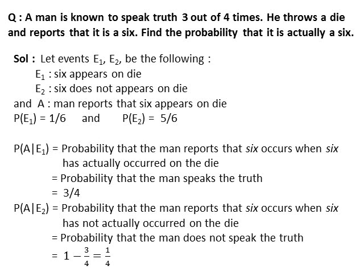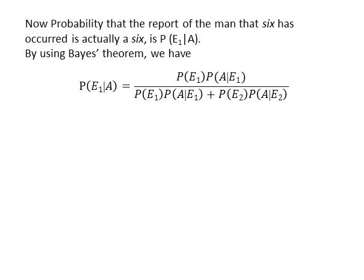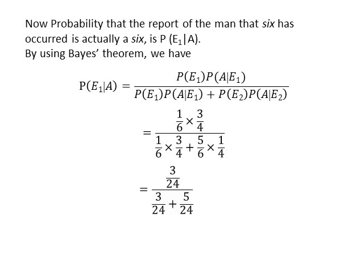Now, the probability that the report of the man that 6 has occurred is actually a 6 is P(E1|A). By using Bayes' theorem, P(E1|A) equals PE1 multiplied by P(A|E1) divided by PE1 multiplied by P(A|E1) plus PE2 multiplied by P(A|E2). Substituting the values and simplifying, we get P(E1|A) = 3/8.